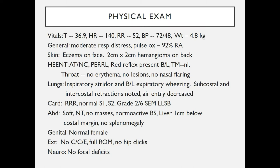HENT is essentially normal. On lung exam, you do appreciate inspiratory stridor and bilateral expiratory wheeze. Subcostal and intercostal retractions are noted and air entry is decreased. Cardiac exam reveals regular rate and rhythm with a normal S1 and S2, but you do hear a grade two out of six systolic ejection murmur at the left lower sternal border. Abdomen is benign other than the liver being palpable one centimeter below the costal margin.